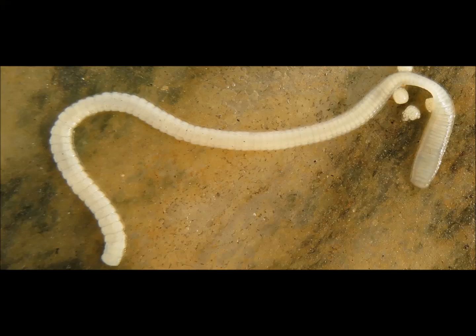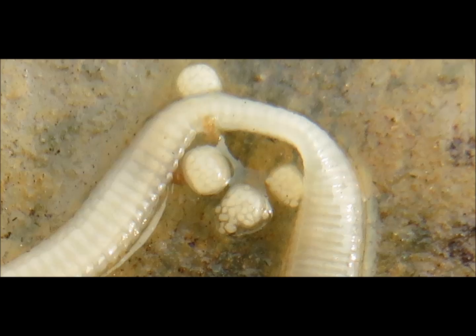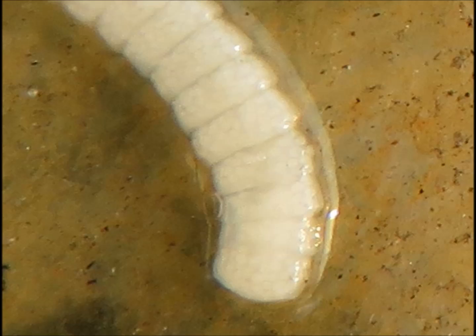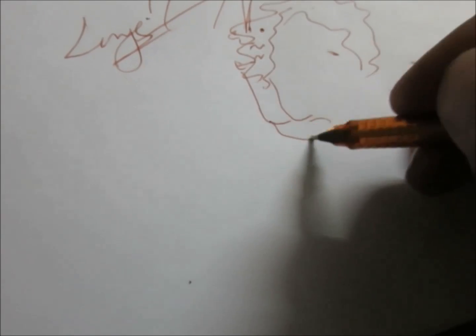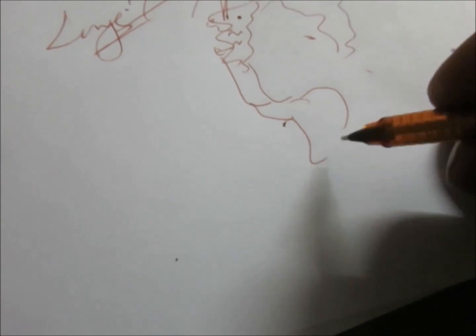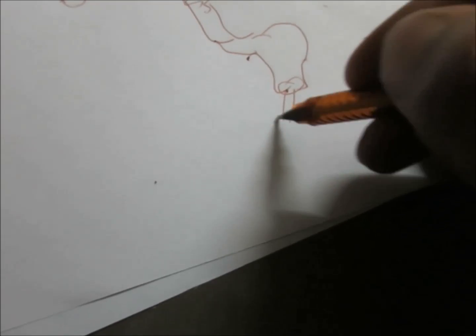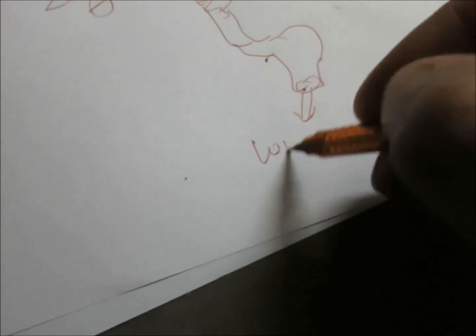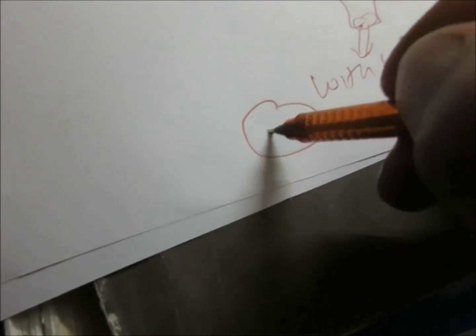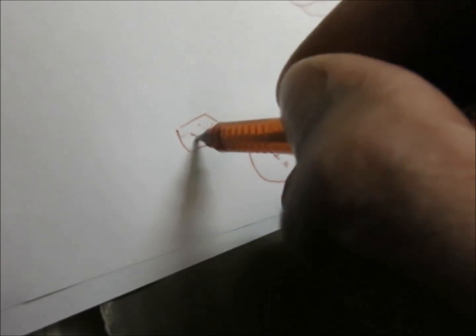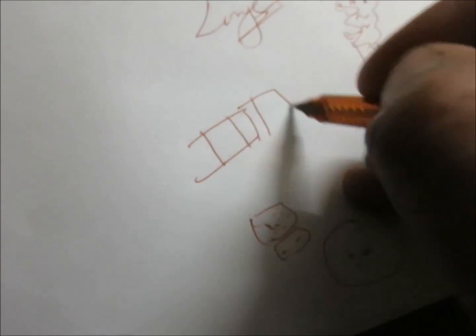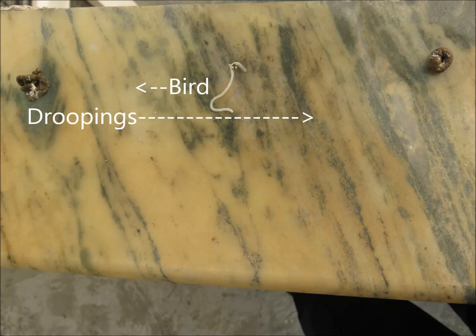Here you can see a close-up of the tapeworm — and an even closer view here. The tapeworm and its eggs come out with the feces of the human, and the cycle continues.